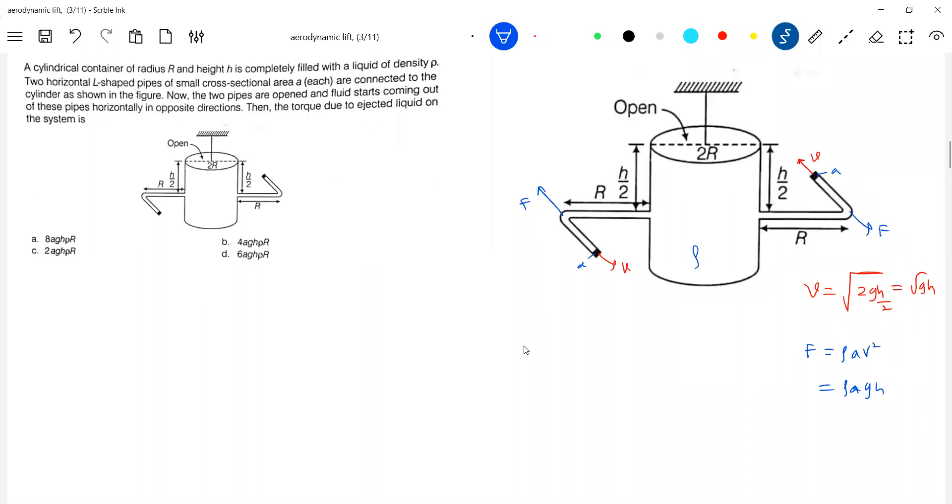v is how much? Root gh. So this much force is acting. What will happen to the container? You will better go for a top view. If you view from the top, it will appear like this.